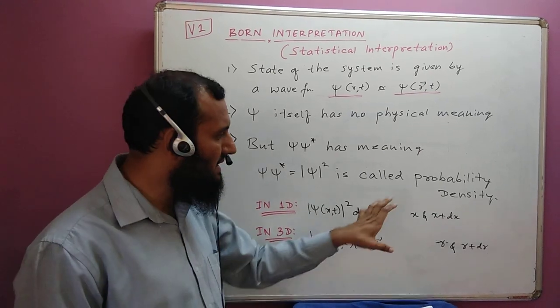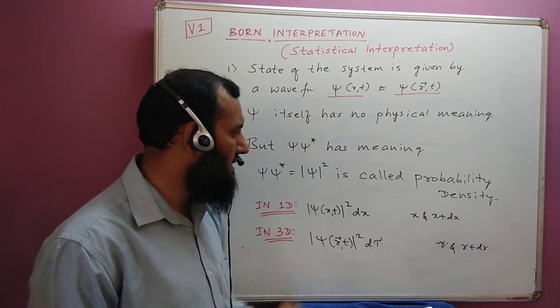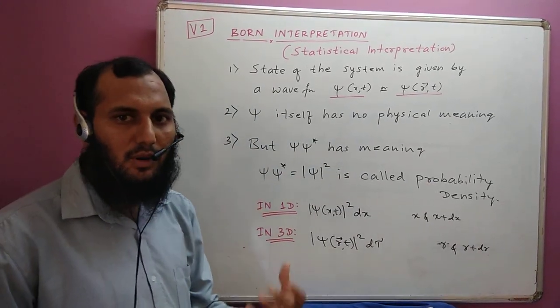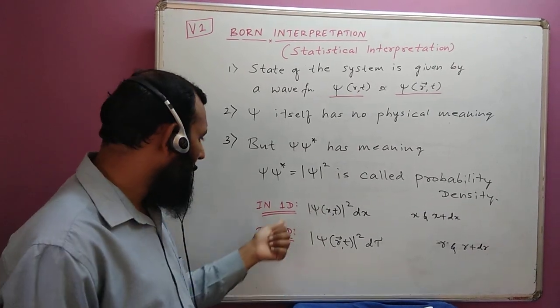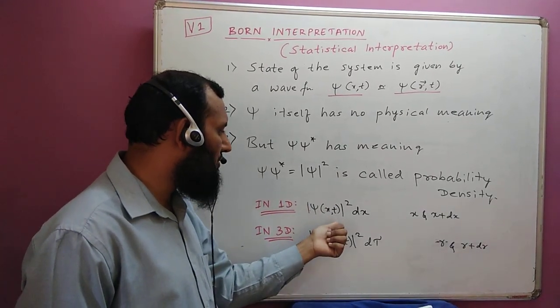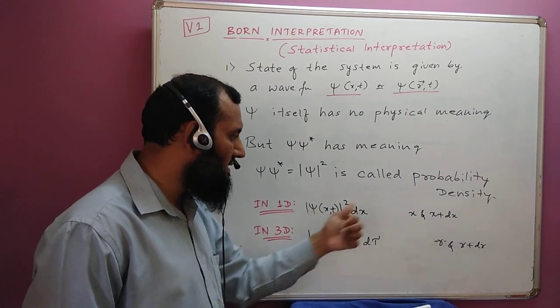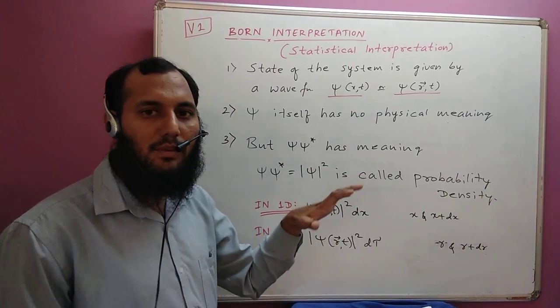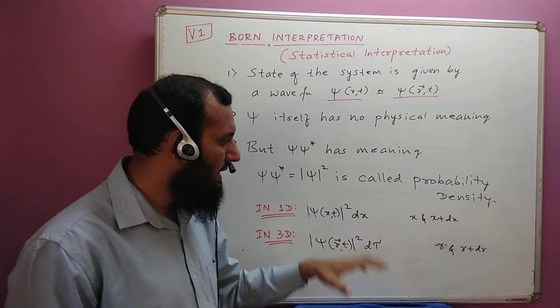This is the statistical interpretation. If we are dealing with a problem in one dimension, then this will be |ψ(x,t)|²dx, and this gives the probability of finding the particle in a space between x and x plus dx.